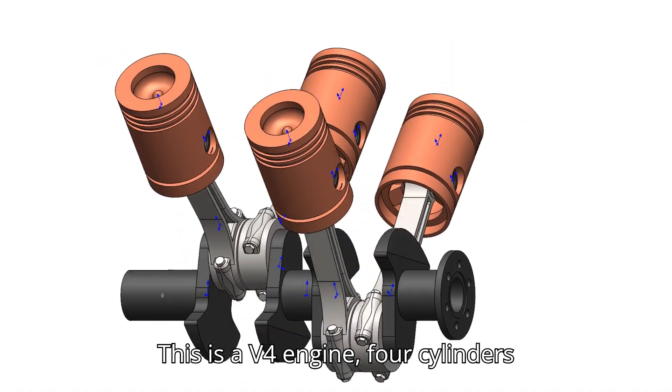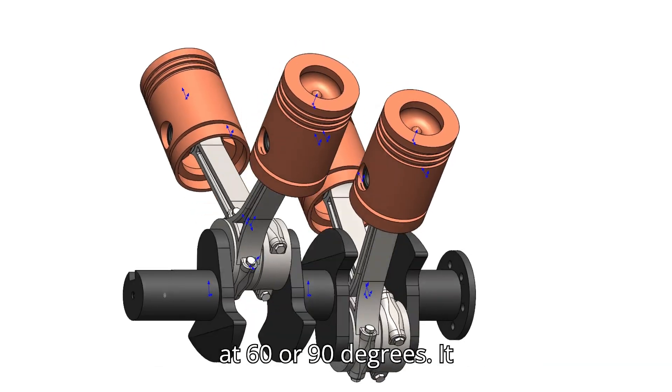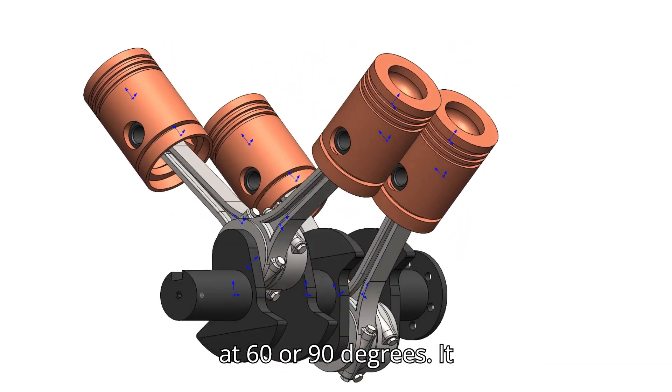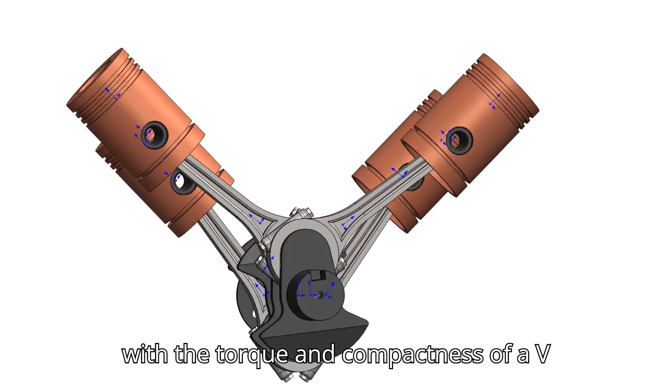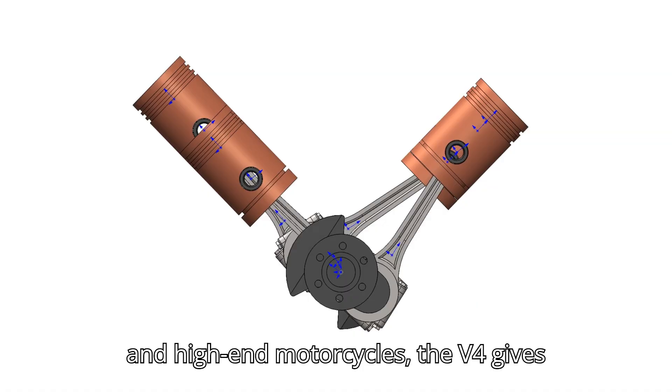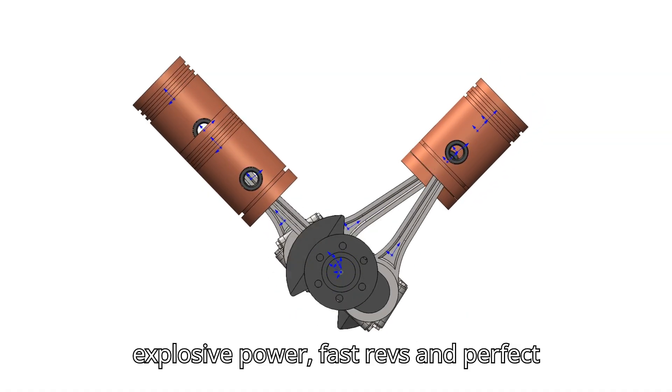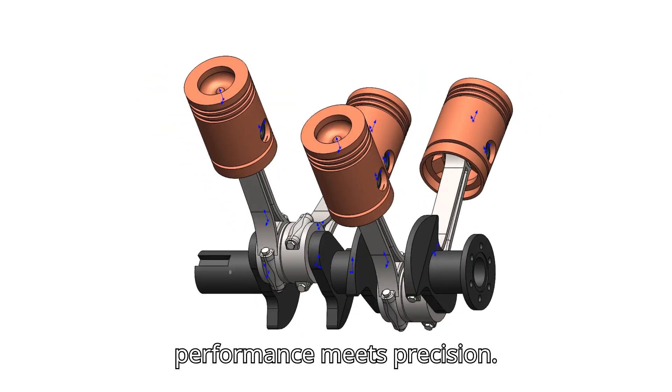This is a V-4 engine, four cylinders arranged in compact V-shape, usually at 60 or 90 degrees. It combines the smoothness of an inline four with the torque and compactness of a V engine. Used in MotoGP bikes and high-end motorcycles, the V-4 gives explosive power, fast revs and perfect balance. V-4, where performance meets precision.